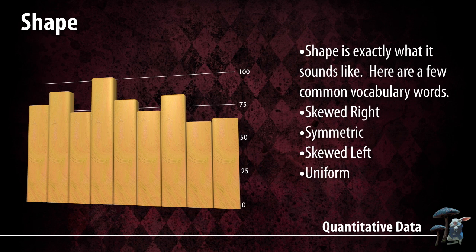Note that uniform is also almost a symmetric type of graph, but uniform is the better description. Sometimes you can have things that are slightly skewed to the right but are more symmetric than skewed. You can say it's slightly skewed to the right or approximately symmetric, but you really want to use the description that best fits the data.